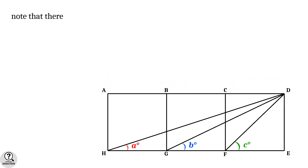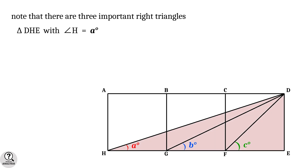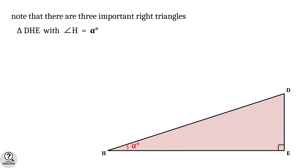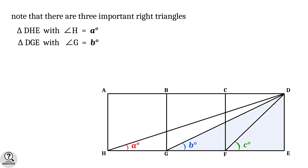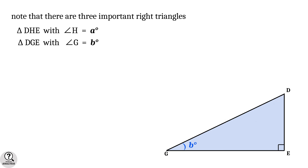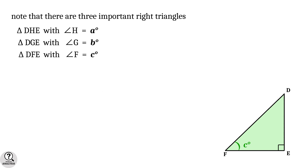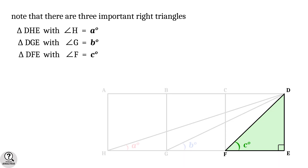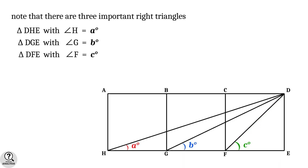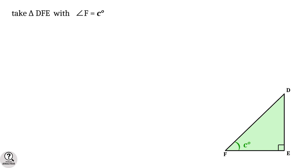Note that there are three important right triangles. The first one is triangle DHE with angle H equal to a degrees. The second is triangle DGE with angle G equal to b degrees. The third is triangle DFE with angle F equal to c degrees.